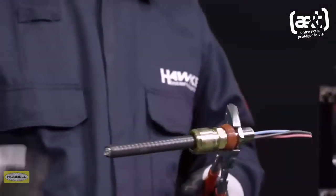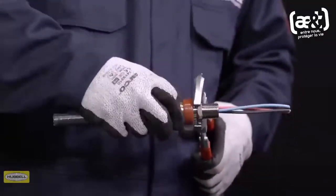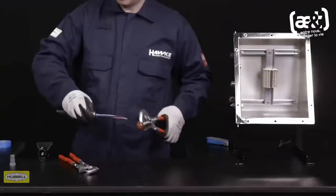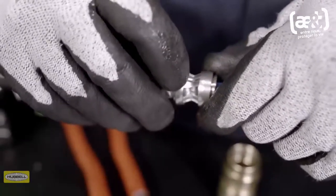Unscrew the middle nut and visually inspect that the Diablo has adequately clamped to the metal clad sheath. If this isn't satisfactory, repeat the previous step.